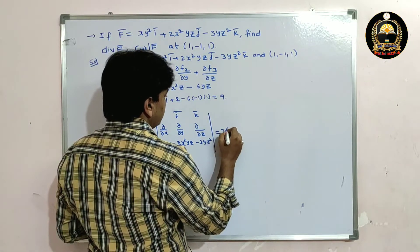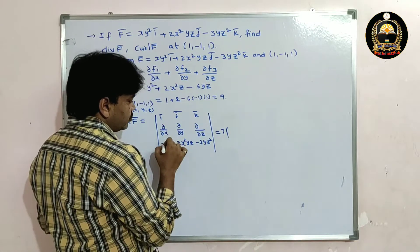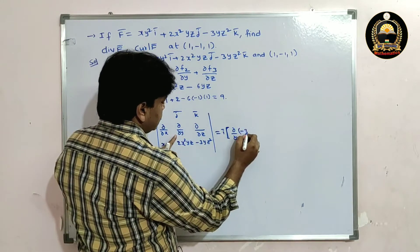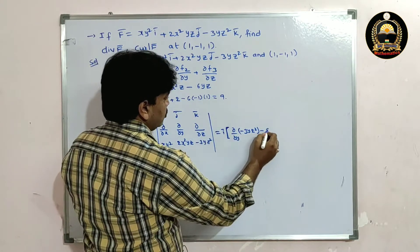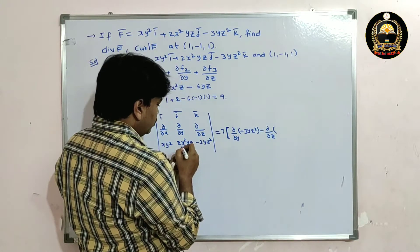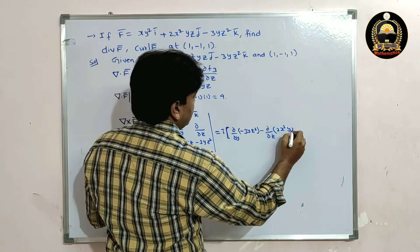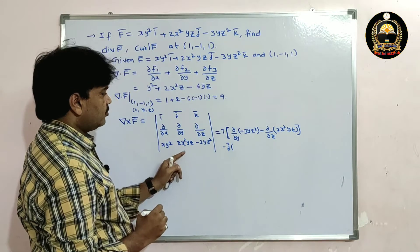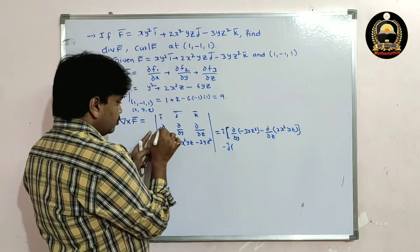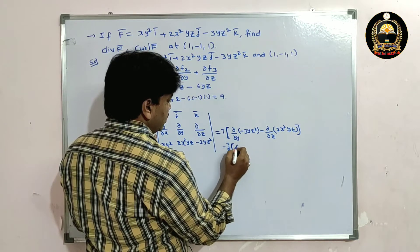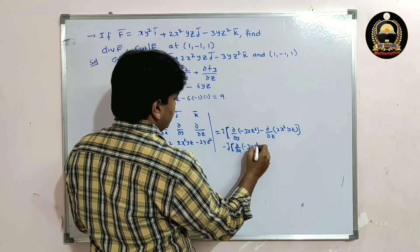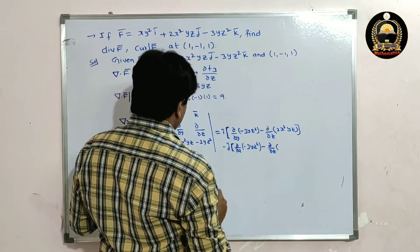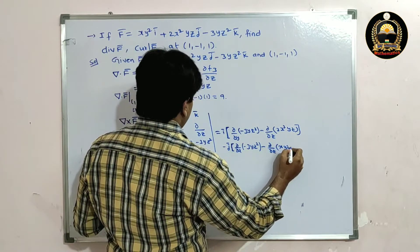Expanding the determinant: ī component — leave first row and first column, we get [∂/∂y of (-3yz²) minus ∂/∂z of (2x²yz)]. Minus j̄ component — leave first row and second column, we get [∂/∂x of (-3yz²) minus ∂/∂z of (xy²)].